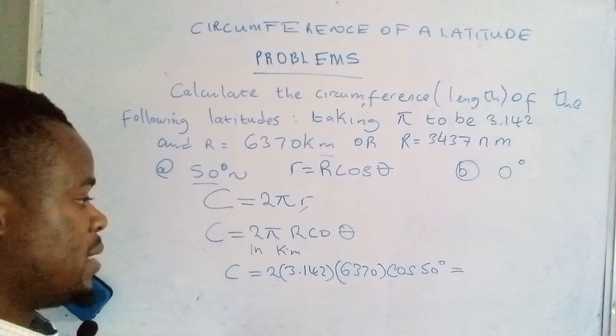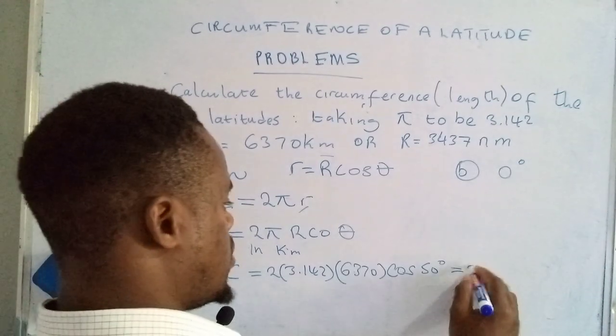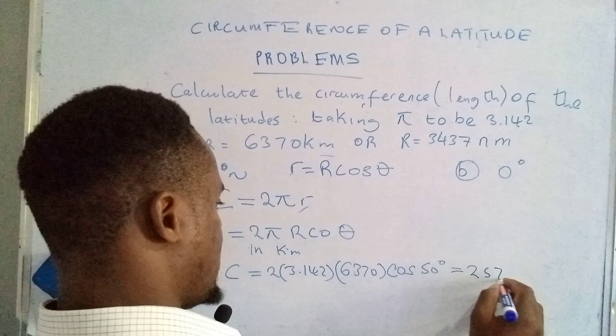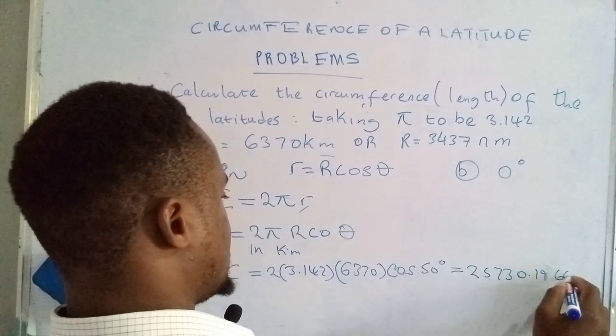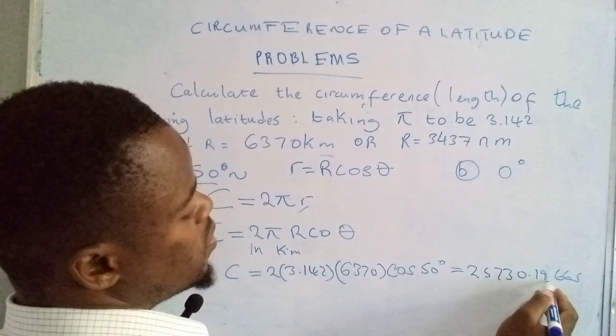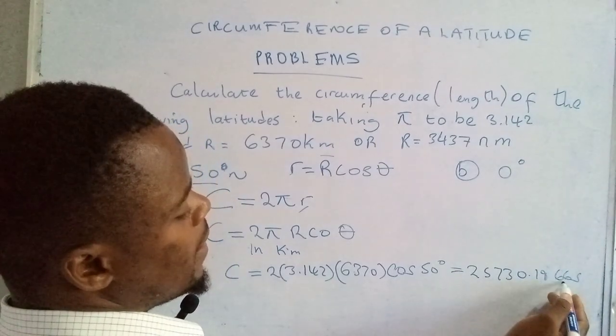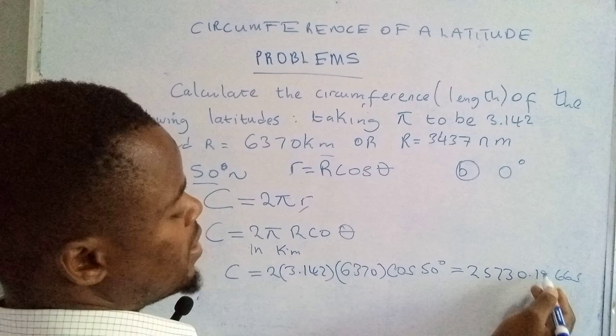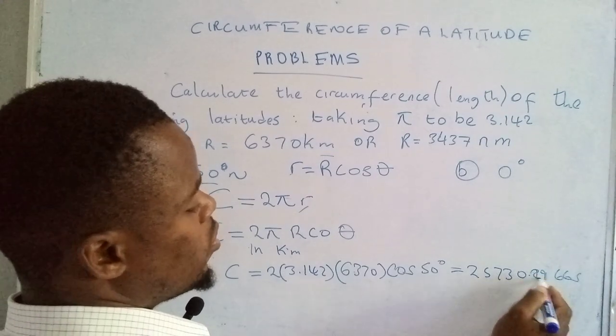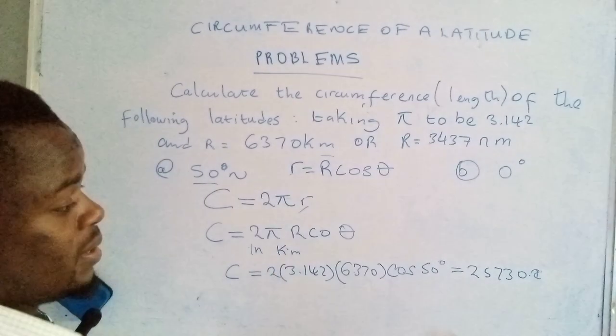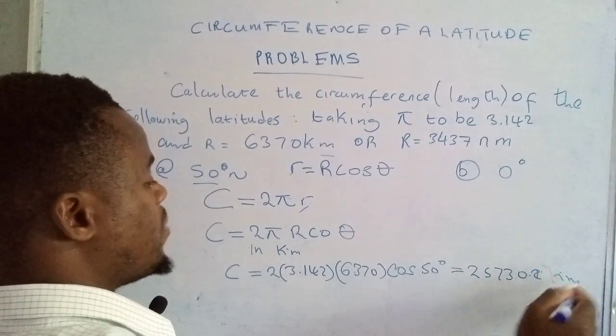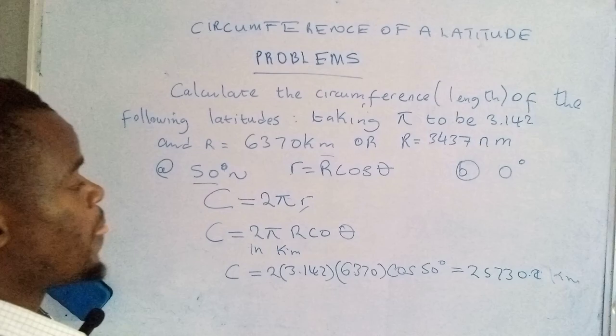So now what I've found is actually 25,730.19665. We round off this one to two decimal places. This one would be increased by one, it would become a 10, then this one would be a 2. All these would become insignificant because they would become zeros. So that's in kilometers. How about the second one?